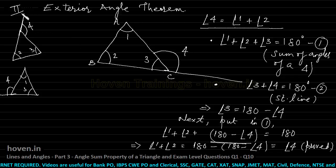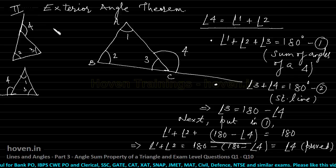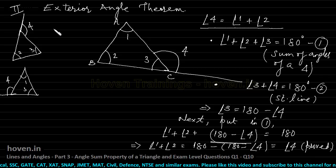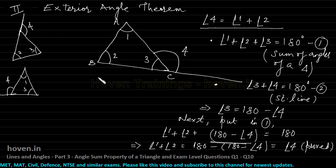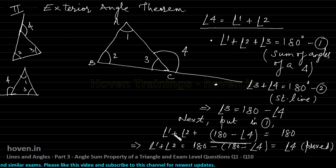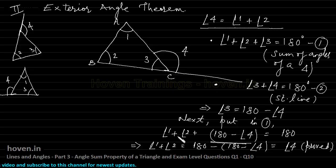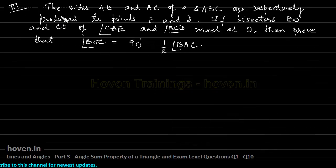The results from theorems 1 and 2 should be remembered at any cost — they will save your time. I am presenting a third result also. It is not necessary that you remember it, but questions on it are being asked abundantly. If possible, you can remember it; otherwise, I will derive it and you can go through the steps. It states that sides AB and AC of triangle ABC are respectively produced to points E and D.